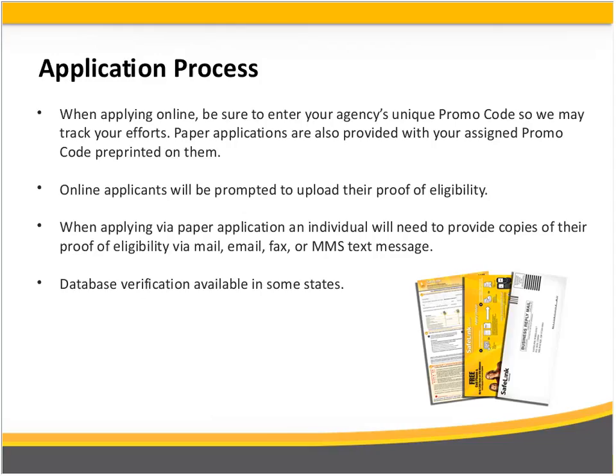After applying on the paper application, if you don't want to mail in your proof, you can send it via email, fax, or even a photo message. In some states, SafeLink has access to a Medicaid database, so if a client is qualifying based on Medicaid enrollment, they don't have to submit their Medicaid card — SafeLink can verify on the backend. This database verification isn't available in every state, but SafeLink is working to expand it. Since this is a federally supported program, proof of eligibility is required to reduce fraud and abuse.